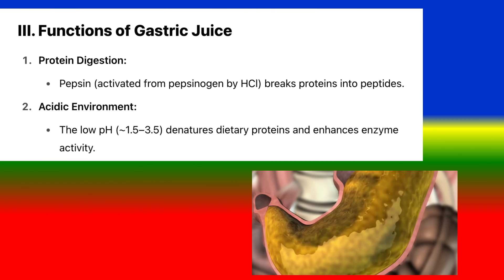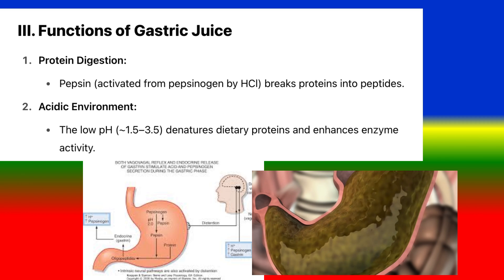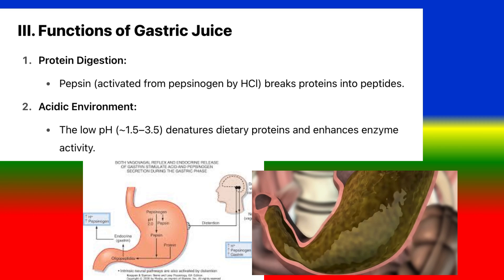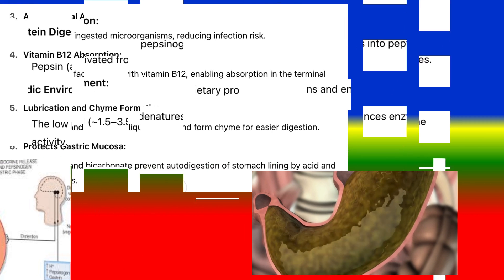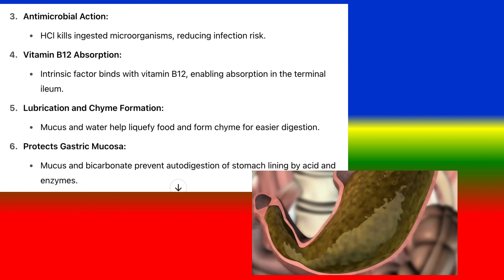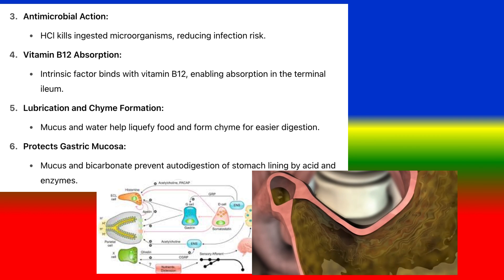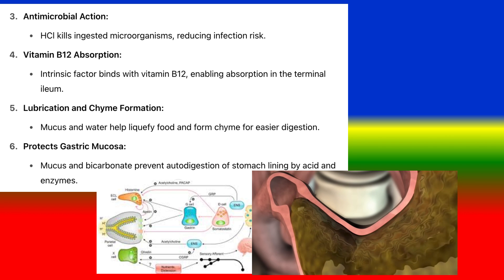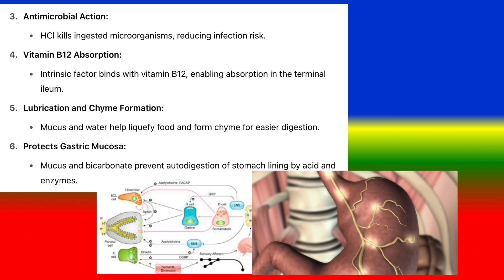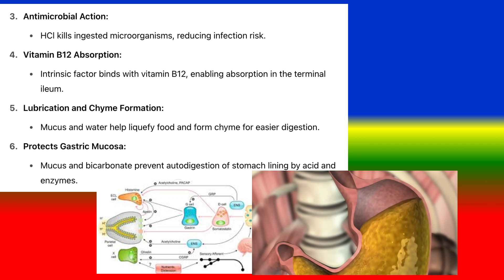Functions of gastric juice: 1. Protein digestion — pepsin, activated from pepsinogen by HCL, breaks proteins into peptides. 2. Acidic environment — the low pH of 1.5 to 3.5 denatures dietary proteins and enhances enzyme activity. 3. Antimicrobial action — HCL kills ingested microorganisms, reducing infection risk. 4. Vitamin B12 absorption — intrinsic factor binds with vitamin B12, enabling absorption in the terminal ileum. 5. Lubrication and chyme formation — mucus and water help liquefy food and form chyme for easier digestion. 6. Protection of gastric mucosa — mucus and bicarbonate prevent autodigestion of the stomach lining by acid and enzymes.